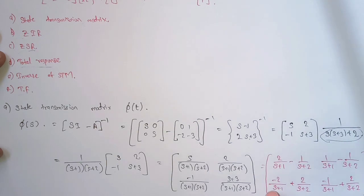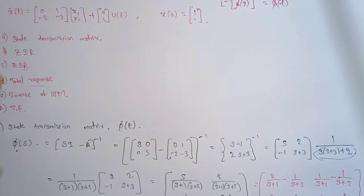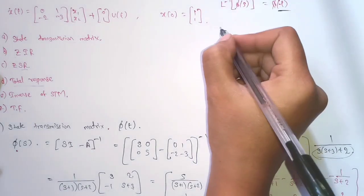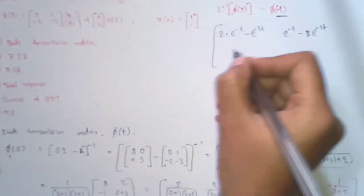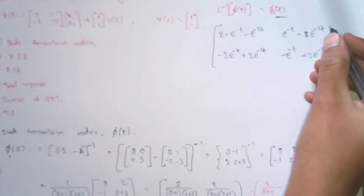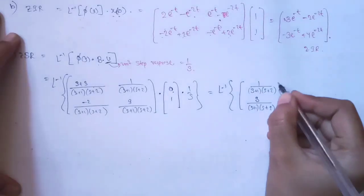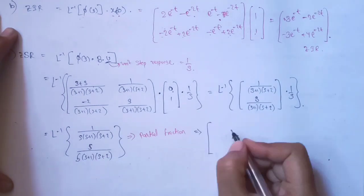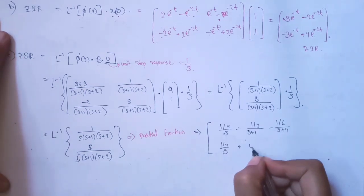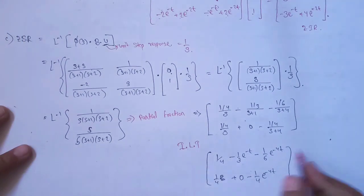After performing partial fractions on each element, we obtain the matrix φ(s). To convert φ(s) into φ(t), we apply the inverse Laplace transform. Taking the inverse Laplace transform of φ(s) gives us φ(t), which is the state transmission matrix.